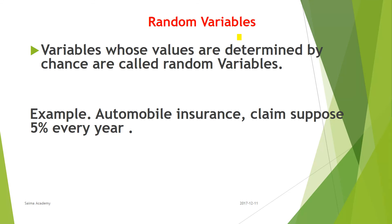Random variables are variables whose values are determined by chance. For example, suppose 1,000 people have automobile insurance and about 5% claim every year. We do not have 100% certainty whether 5% or 10% will claim — this uncertain value is the random variable.